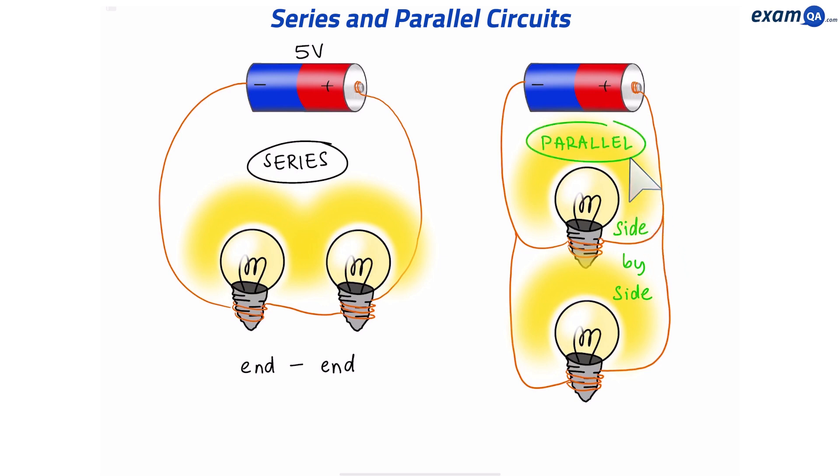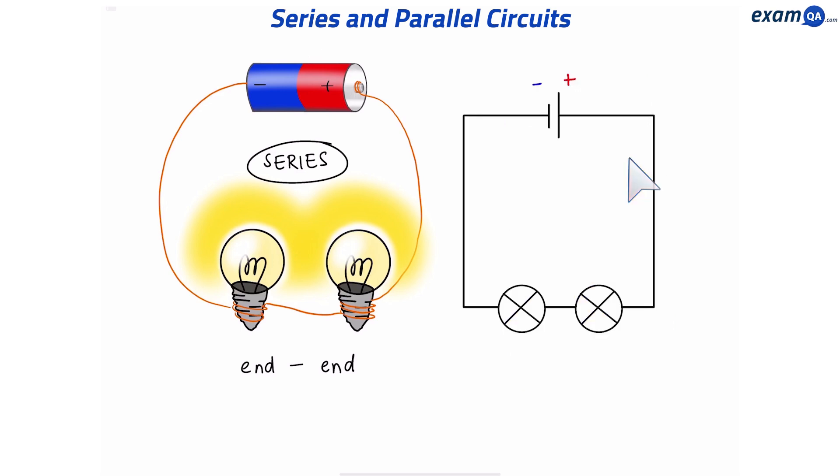Let's talk about what makes these circuits different. So starting with the series circuit, here's how we draw it as a basic circuit diagram. Here's how you represent the cell. And our two bulbs are over here.